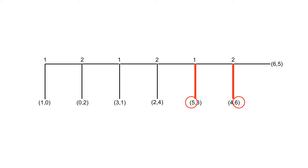In our centipede game, using backward induction, player two at the final node will take for a payoff of five. At the node immediately before, player one will take for a payoff of five instead of passing, given player two will then take, giving player one a payoff of four. Therefore, at the node before, player one will take for a payoff of four instead of passing for a payoff of three. Therefore, at the node before, player one will take for a payoff of three instead of passing for a payoff of two. Therefore, player two at the node before will take for a payoff of two instead of passing for a payoff of one.